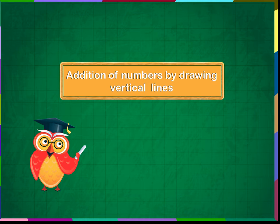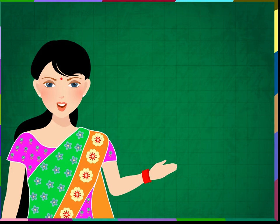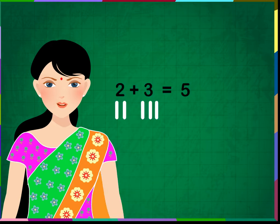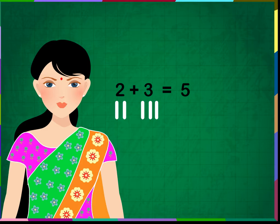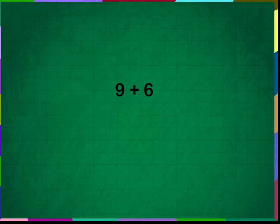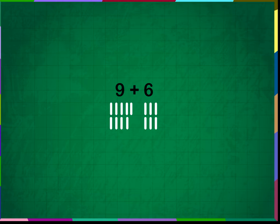Addition of numbers by drawing vertical lines. We know that we can add numbers by drawing vertical lines below the numbers and counting them all together. We have done such sums in our previous lesson. Let us do the same for bigger numbers. Add nine plus six: put nine vertical lines below nine and six vertical lines below six, then add all the lines.